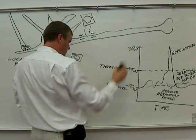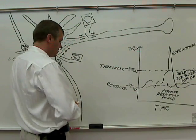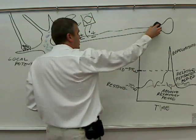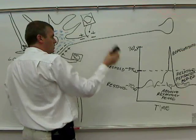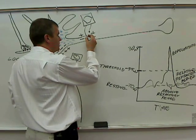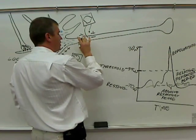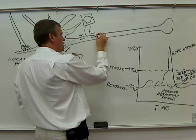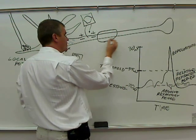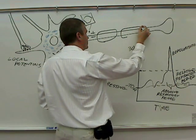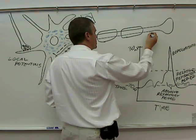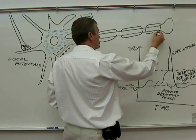And the Schwann cells. If this is a peripheral neuron, like a motor neuron perhaps, then the myelin will be made of Schwann cells. So here's a Schwann cell, here's a Schwann cell, and here's a Schwann cell.